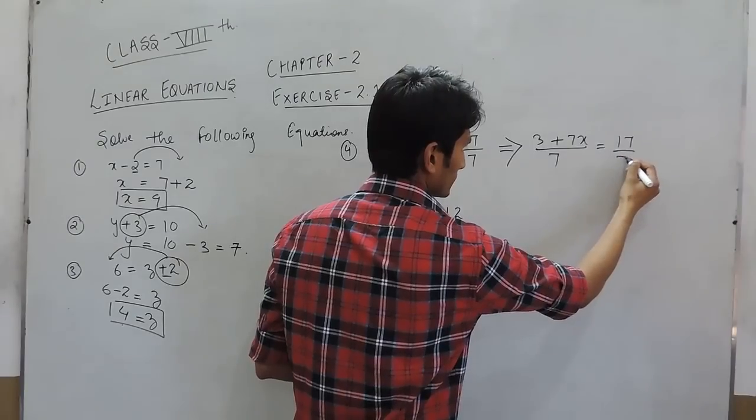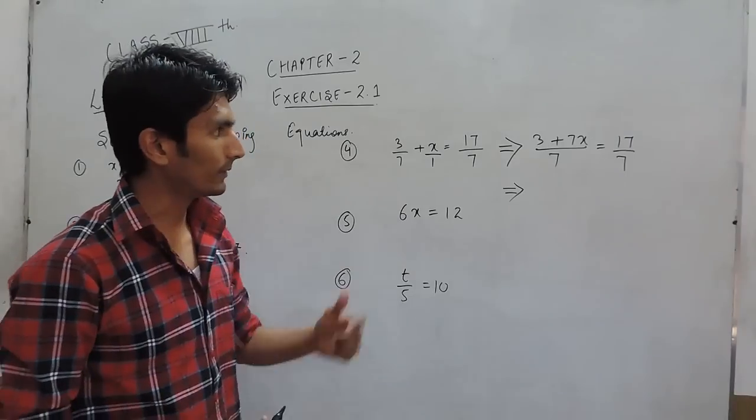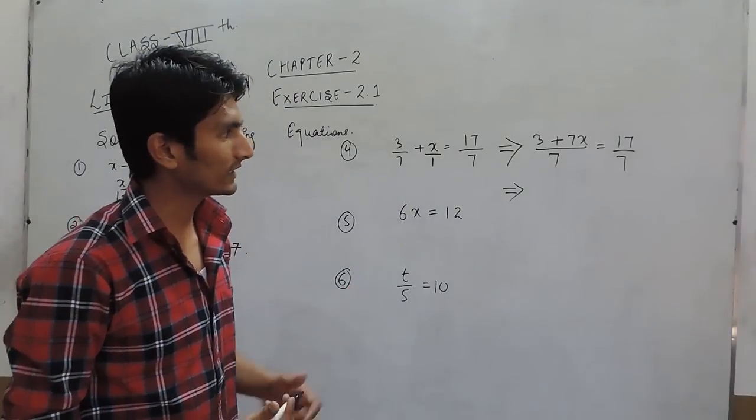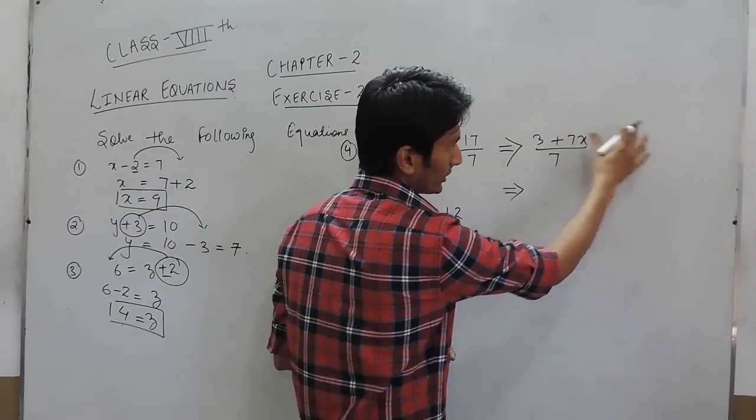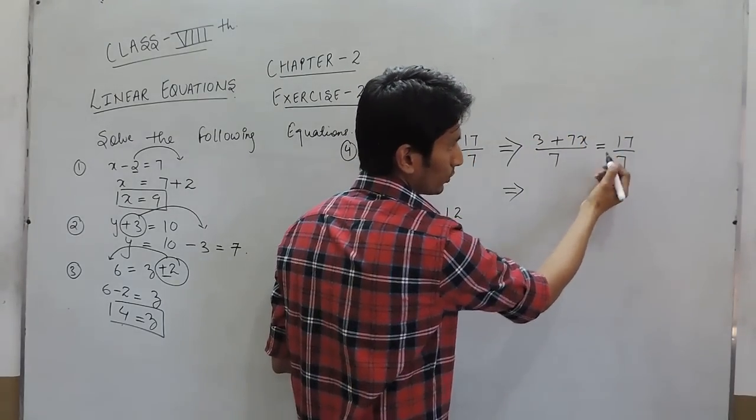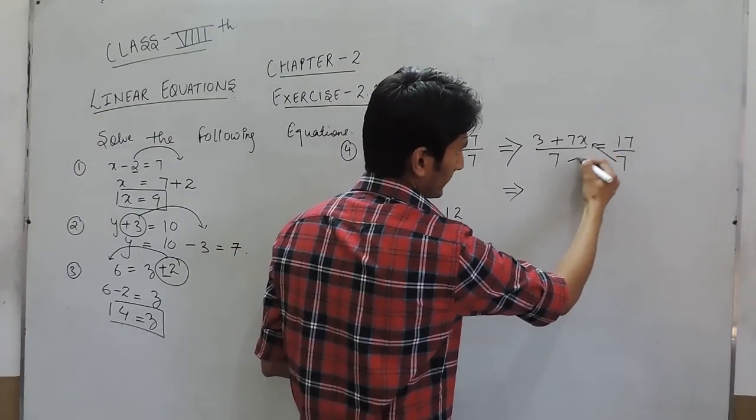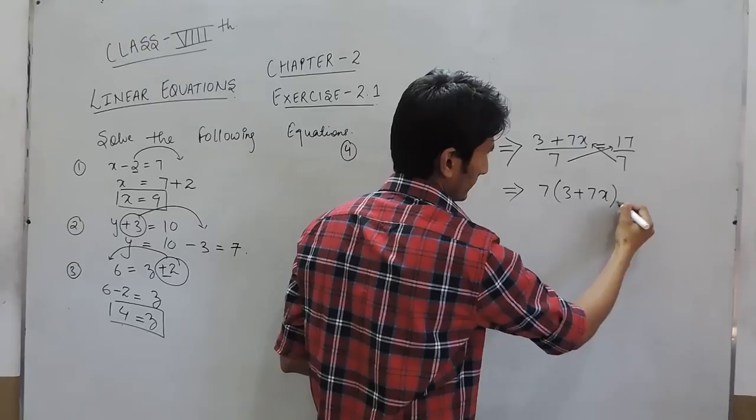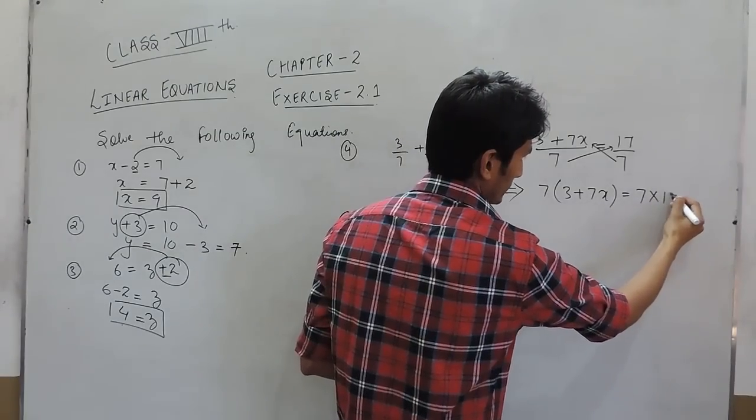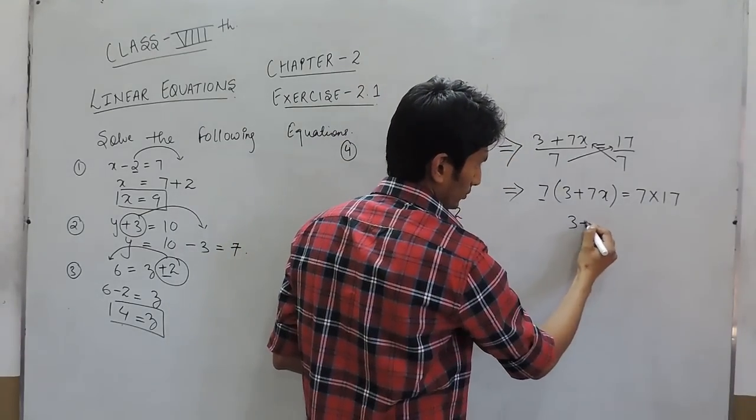While cross multiplying, one thing is very important: you can only cross multiply when there are only 2 fractions on the equals sign. While multiplying it, it is 7 times 3 plus 7x, and it is 7 times 17. Then this 7 goes to this side.